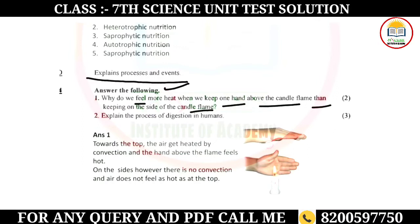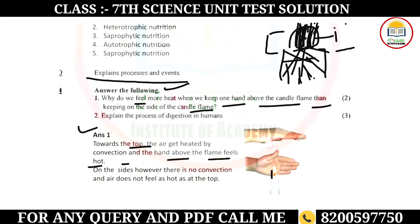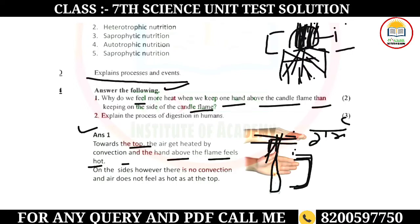Keeping your hand on the side of a candle flame — children, you will know normally wherever you have light and flame, if you put your hand there you will feel warm. When you have a flame, the air gets heated. Towards the top, air gets heated by convection and the hand above the flame feels hot. When you hold your hand to the side of a candle, heat is transferred by conduction and you will feel warmth on the side as well.